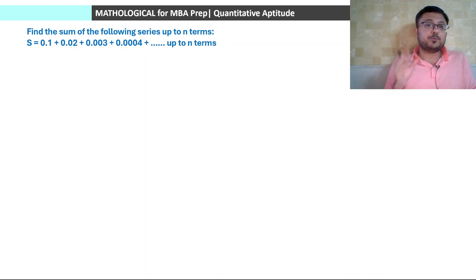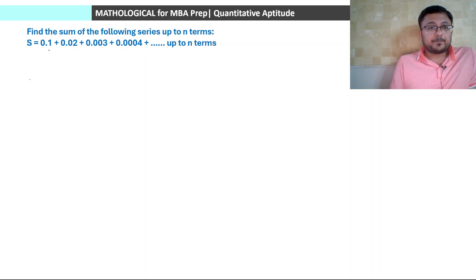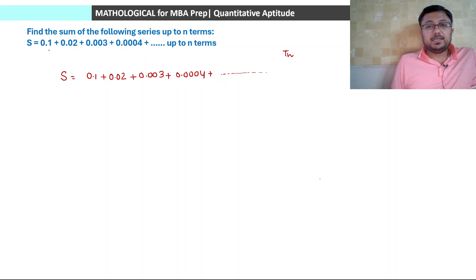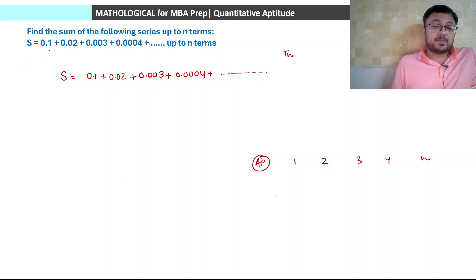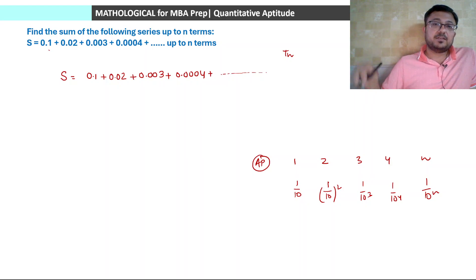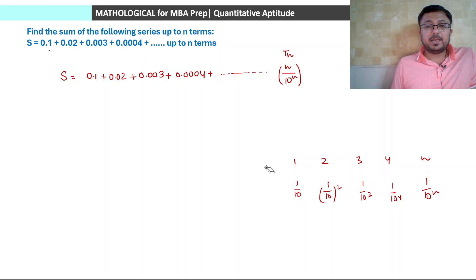Next question: find the sum of 0.1 + 0.02 + 0.003 + 0.0004 + ... up to n terms. This is also an AGP. The AP part is 1, 2, 3, 4 (giving nth term = n) and the GP part is 1/10, 1/100, 1/1000 (common ratio 1/10, giving nth term = (1/10)^n). So the nth term of this series = n/(10^n). We multiply by the GP's common ratio 1/10 to convert to GP, then subtract.